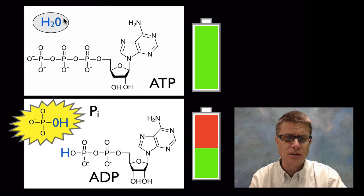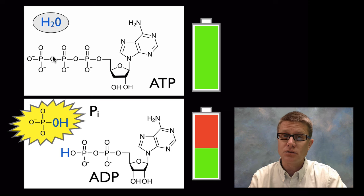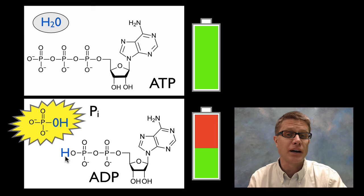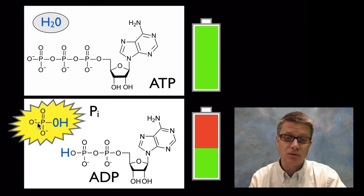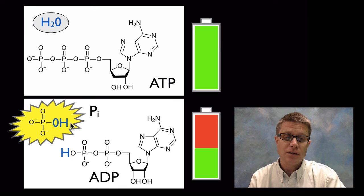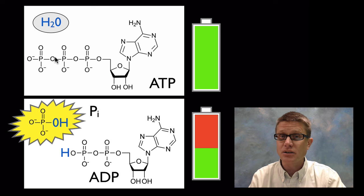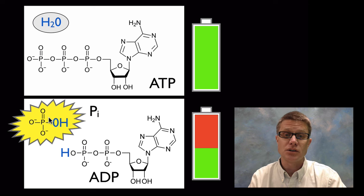Water breaks the last phosphate group through hydrolysis — adding an OH on one side and an H on the other — creating ADP with just two phosphates. That third phosphate is released. When you're dealing with ATP you'll often see Pi, which represents that released inorganic phosphate. Since there is potential energy in that bond, the released phosphate carries some of that potential energy with it.